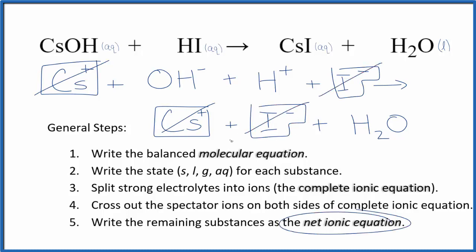What's left? That's the net ionic equation for CsOH plus HI. I'll clean it up, write the states, and we'll have our net ionic equation.